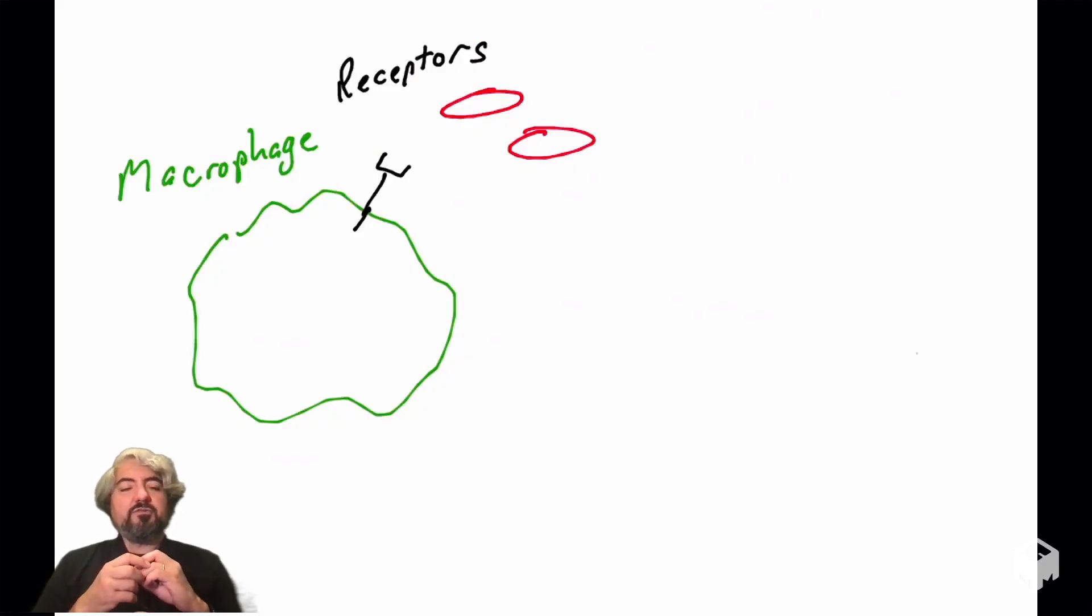Let's introduce our favorite phagocyte, the macrophage, large eater. How do macrophages know what to phagocytose? Macrophages have receptors on their surface, and we'll talk in a later video about the plethora of receptors found on the surface of macrophages that can recognize molecules on the surface of pathogens.